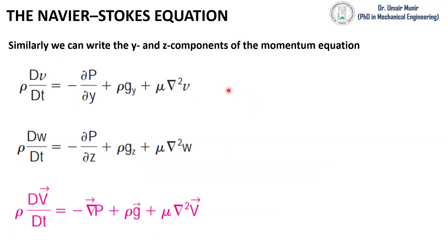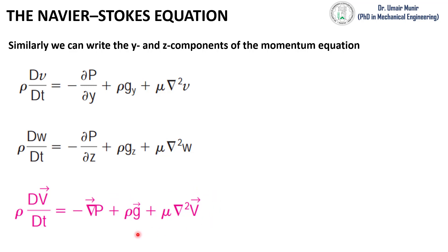Similarly, we can write the y-momentum equation and z-momentum equation. And if we want to combine these three Navier-Stokes equations into one, we will replace the velocities with a vector, pressure, and gravity force with vectors. This is the compact form of the Navier-Stokes equation.